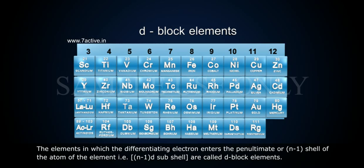The elements in which the differentiating electron enters the penultimate or (n-1) shell of the atom of the element, that is (n-1)d sub-shell, are called d-block elements.